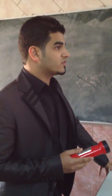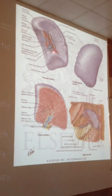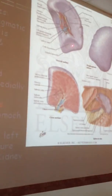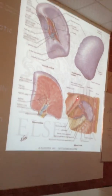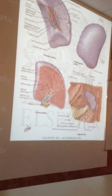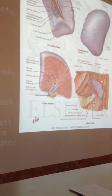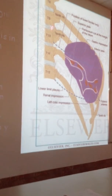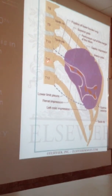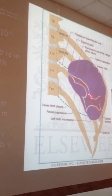The diaphragmatic surface is convex to fit the concavity of the diaphragm, while the visceral surface is directed anterior-medially. Its anterior relations are the stomach, the left kidney, the tail of the pancreas, and the left colic flexure. Posteriorly, it is related to the 9th, 10th, and 11th ribs, and it lies along the long axis of the 10th rib.